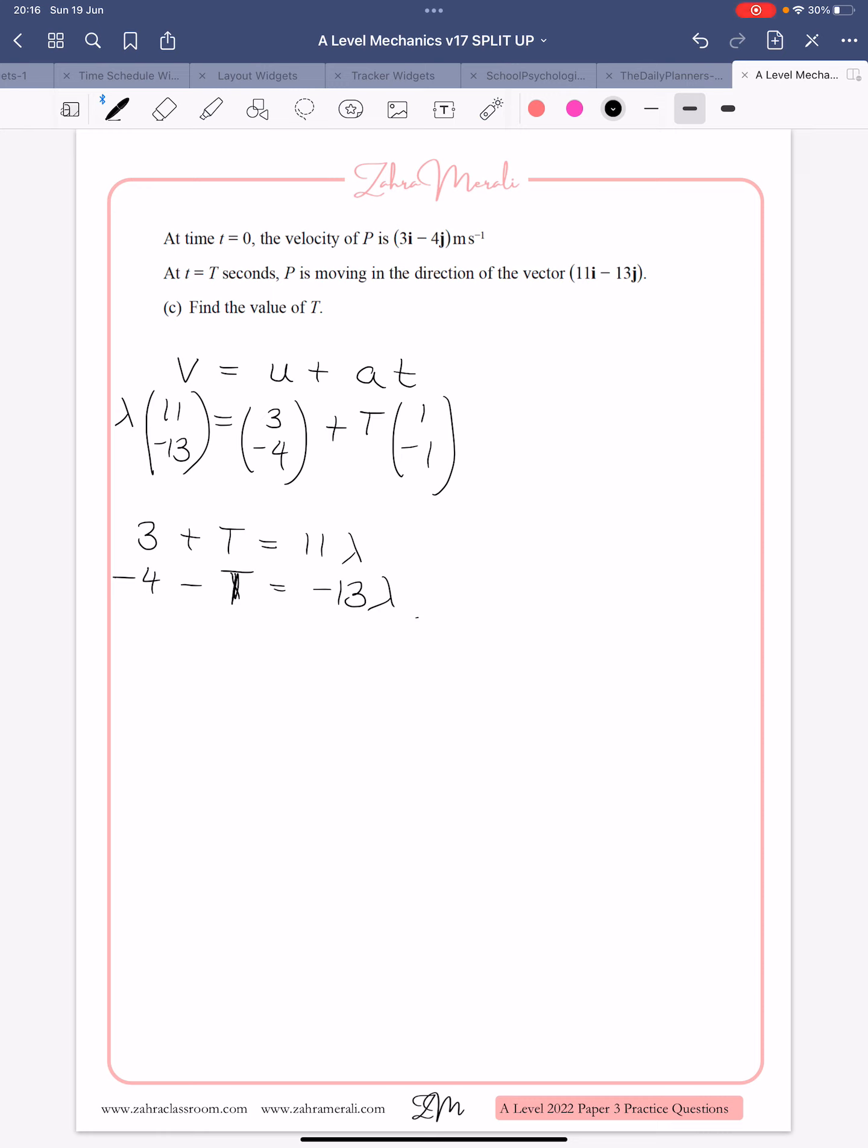We could add those together. That's going to give us minus 1. We do 1 plus 2. We're going to get minus 1 equals minus 2 lambda, so lambda is a half. When we substitute that back in, we're going to get our T, so we'll get 3 plus T equals 11 over 2. So T must be 2.5. And there's your final question.